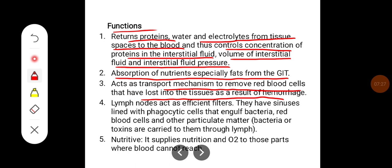Lymph nodes act as efficient filters. They have sinuses lined with phagocytic cells that engulf bacteria, red blood cells and other particulate matter such as bacteria or toxins which are carried through the lymph. They have nutritive value, supplying nutrition and oxygen to parts where blood cannot reach.